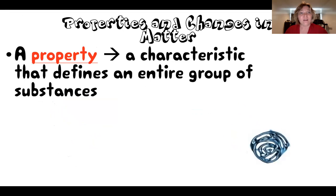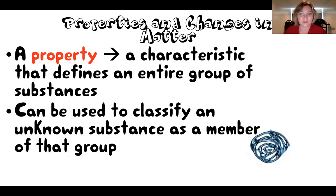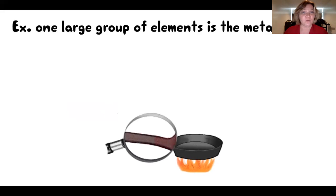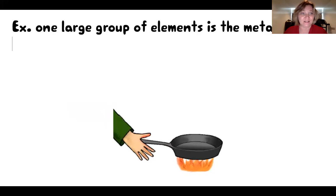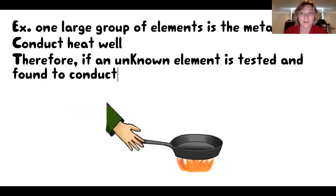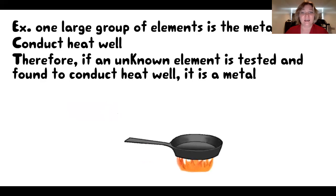We can assign properties to matter. A property is a characteristic that defines an entire group of substances and it can be used to classify unknown substances as members of a certain type of group. For example, one large group of elements is the metals, and one property of metals is that it can conduct heat well. So if we find an unknown element and find that it is a good conductor of heat, then we can classify it as a metal.